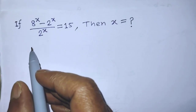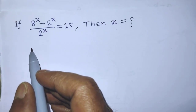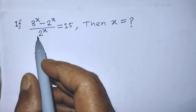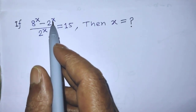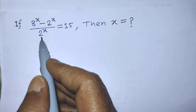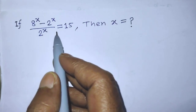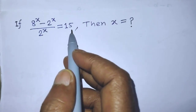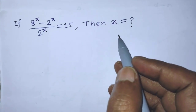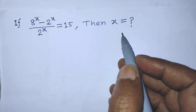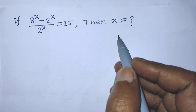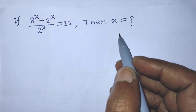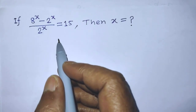Hello guys, you are welcome to solve this math problem: if 8 to the power x minus 2 to the power x over 2 to the power x is equal to 15, then find the value of x. Today in this video, I am telling you how to find the value of x from this equation.